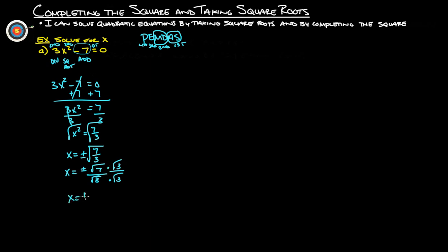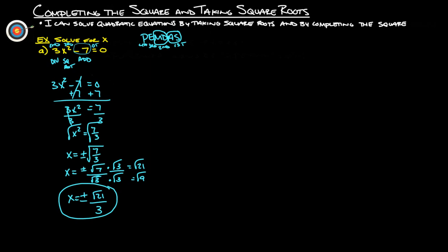We get x equals plus or minus the square root of twenty-one over the square root of nine. The square root of nine is three, so we no longer have a root in the denominator. The final answer is plus or minus the square root of twenty-one over three. That's solving by taking square roots.